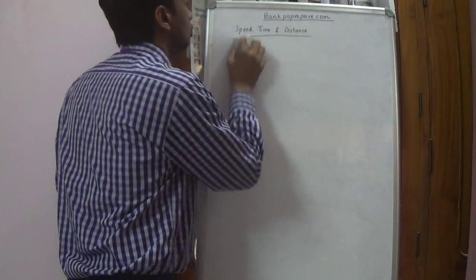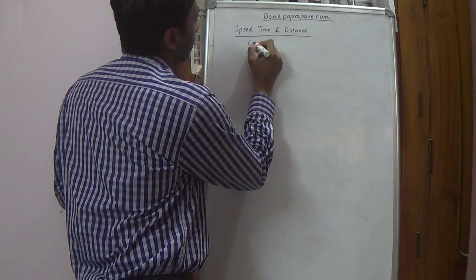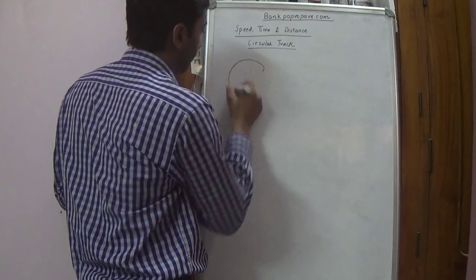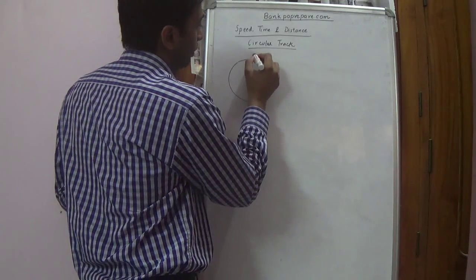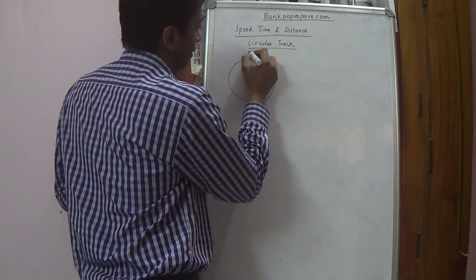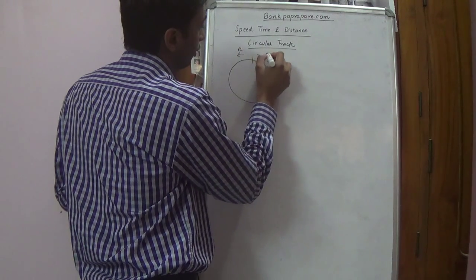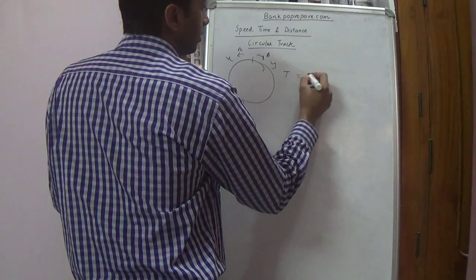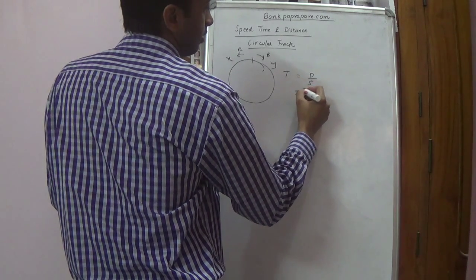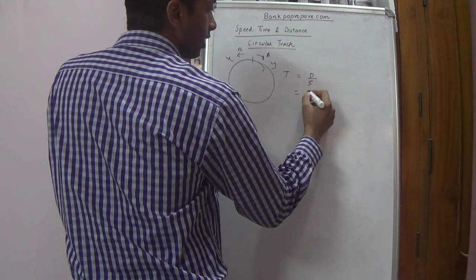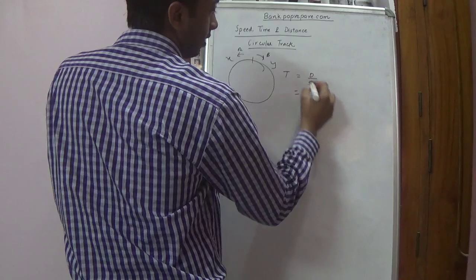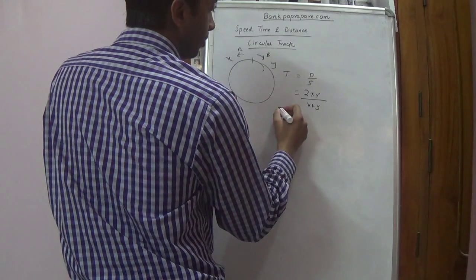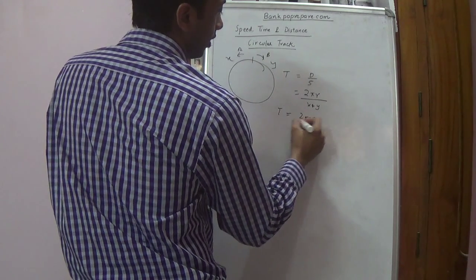The last topic is circular tracks. A person moving at speed x and another at speed y on a circular track of radius r. Time taken to meet is equal to distance divided by speed. The distance is the circumference of the circle, 2πr, divided by (x+y) if moving in opposite directions, or divided by (x−y) if moving in the same direction.